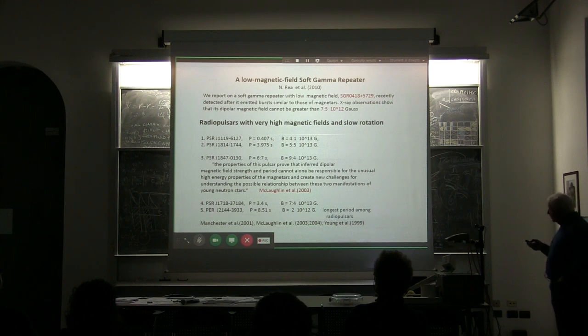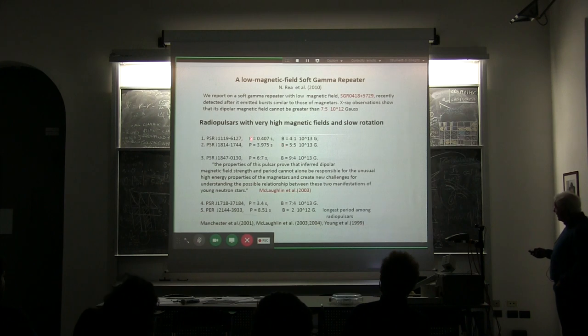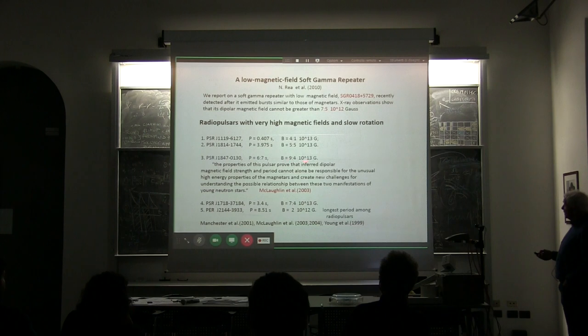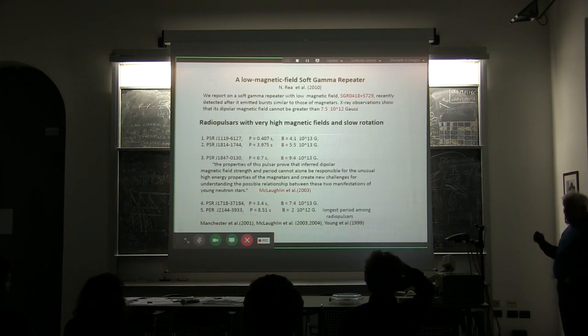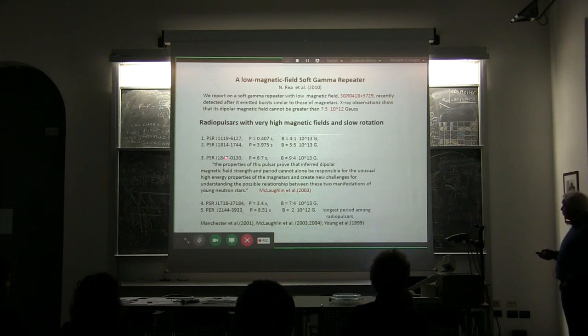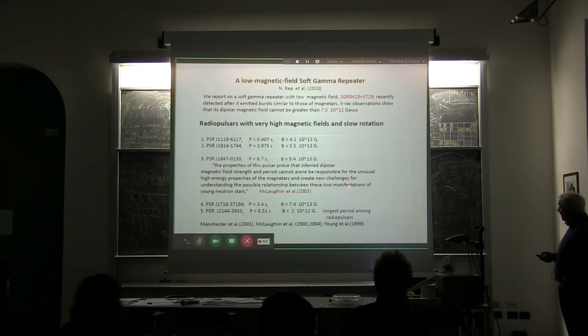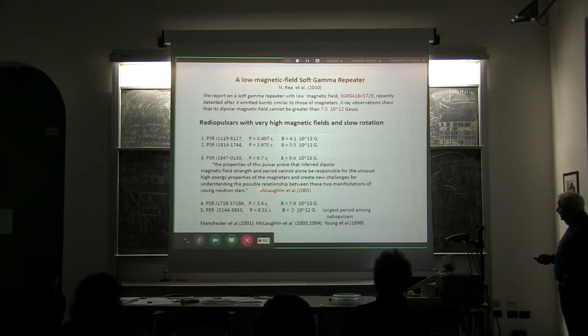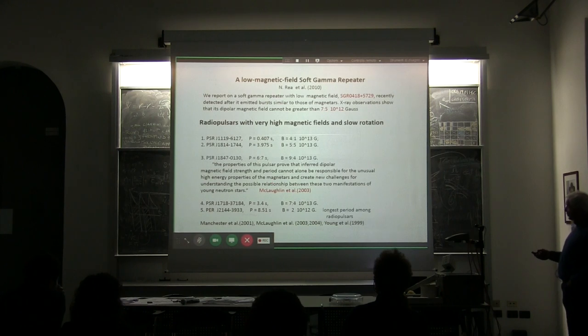Second, slow rotation and very high magnetic field. If you look at the radio pulsars which I have shown you the diagram first, there are radio pulsars which has magnetic fields and periods close to magnetars. Especially, look at this pulsar. It has period 7.7 seconds and magnetic field 0.14. And it has no explosions, just normal pulsar. Therefore, people who are radio astronomers who observe this make conclusion that property of pulsar proves that inferred bipolar magnetic field strength and period cannot be alone responsible for usual high energy properties of Magnetar.